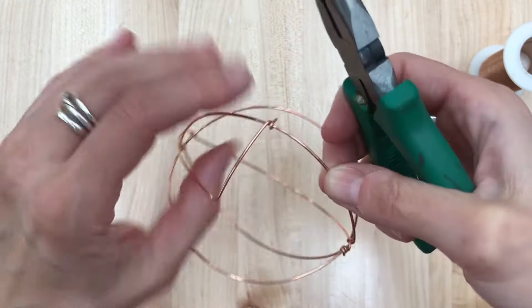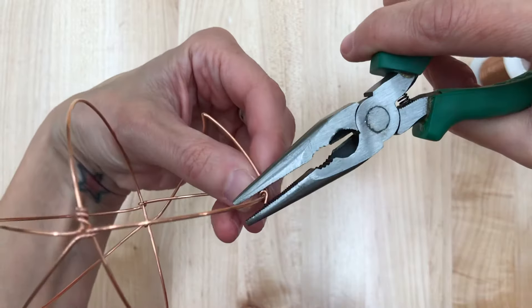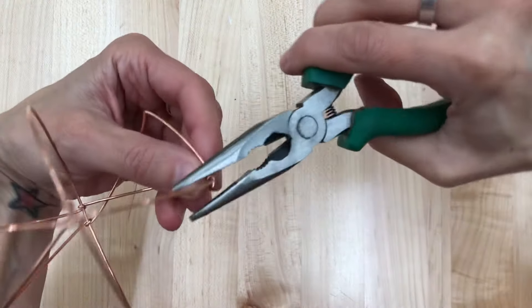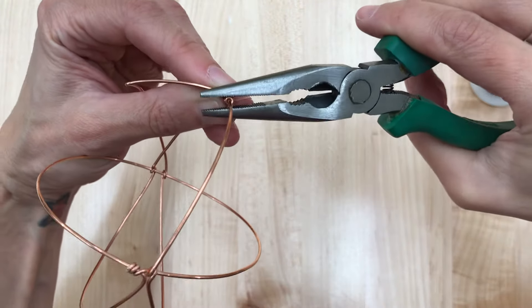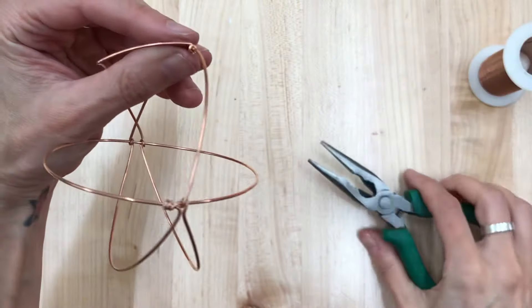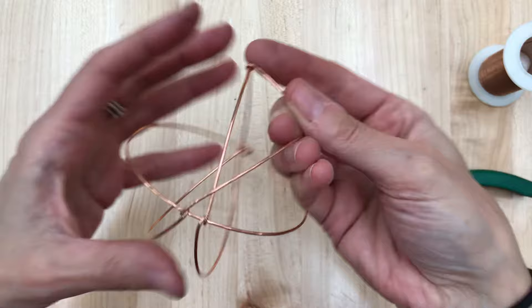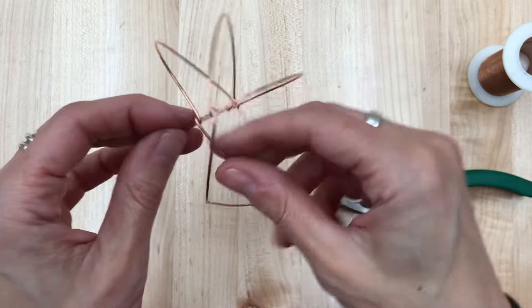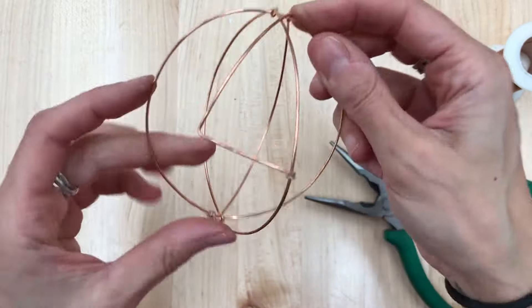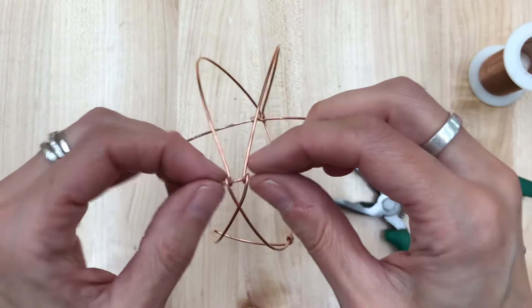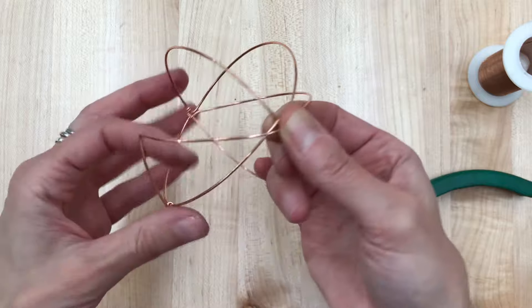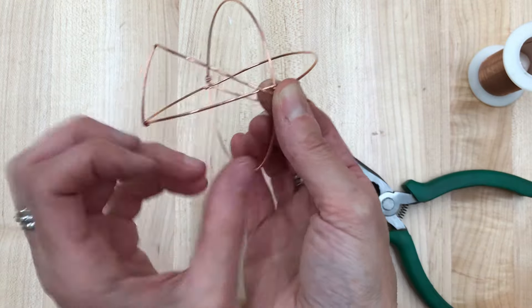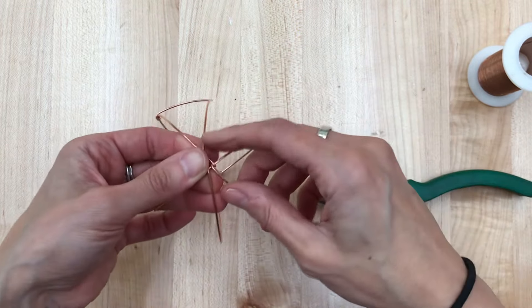When you trim those ends just try to point the pliers down so that you don't blind yourself. All right. And there you have it. I'm getting a little bit of movement here with these two. Sometimes you can just squeeze and squeeze and squeeze and it doesn't make a difference.